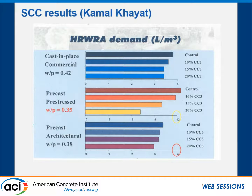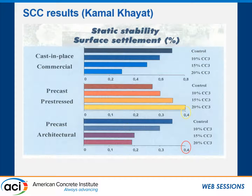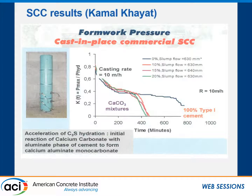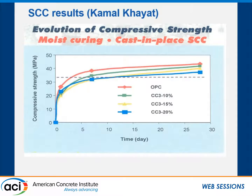The reduction in HRWR demand is more drastic with Type 3 cement than Type 1. With Type 1 cement, every time he reduced cement by up to 20%, the static stability got better — a more self-sustaining, stable SCC system. Another very interesting result was the reduction in form pressure, which is very important for self-consolidating concrete applications. Again, this was up to 20% replacement using a 3-micron D50 product.